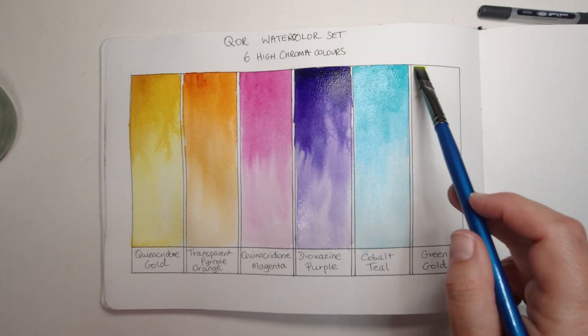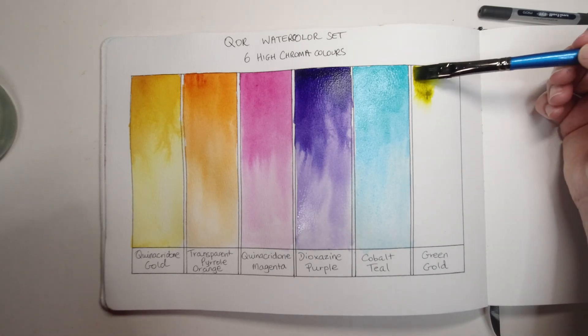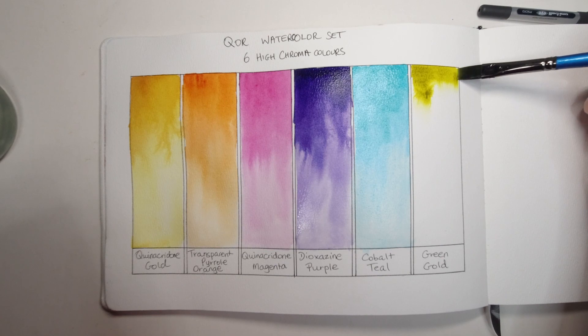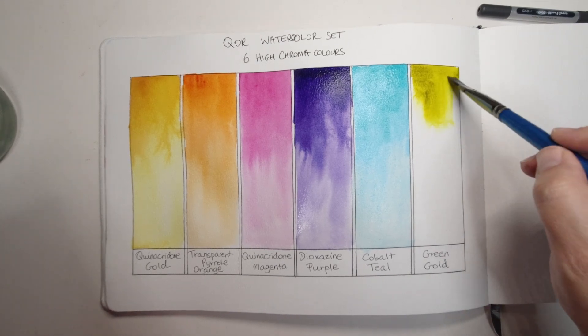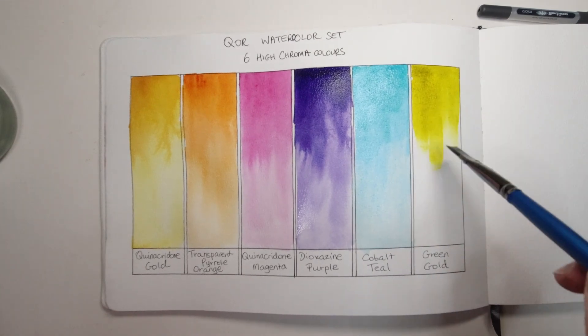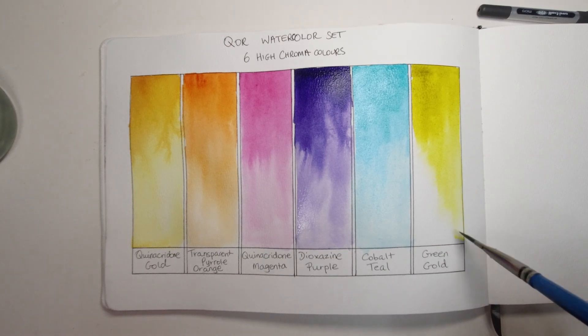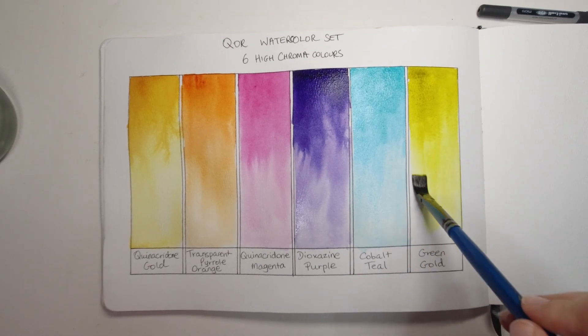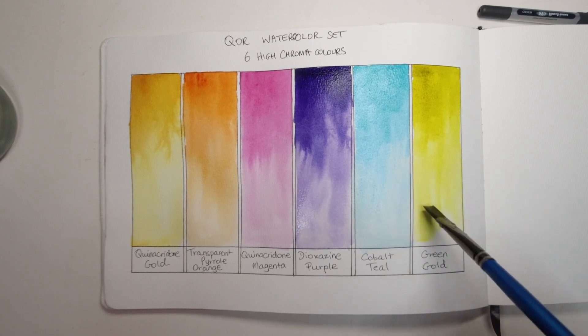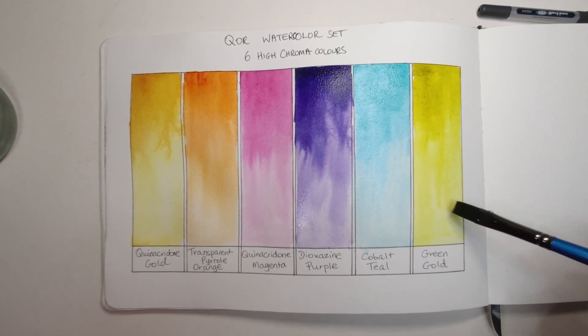And lucky last here is the green gold. This is a series 3 and is another single pigment color which is PY129. It has good light fastness, it's transparent and semi-staining. I like this color, it goes from a very yellowy green to a very yellow yellow, almost neon yellow once you start to dilute it out. And I quite like that, it's similar to the quinacridone gold even though it's a single pigment in this case.